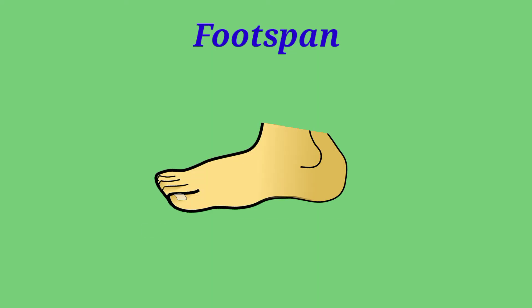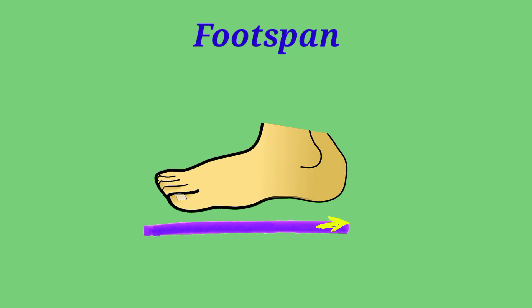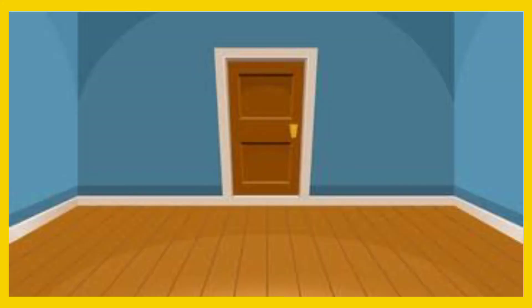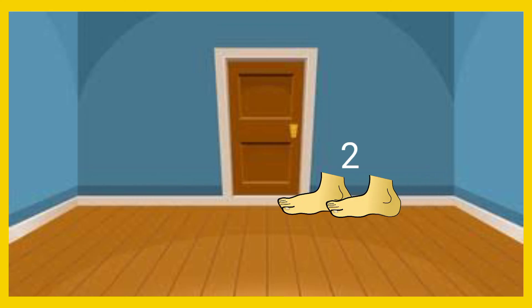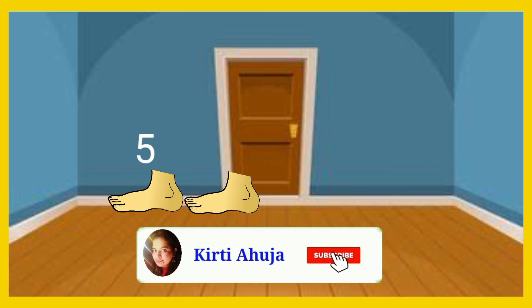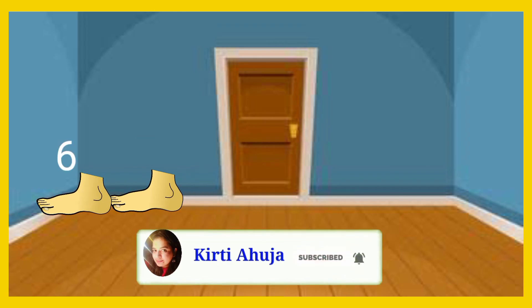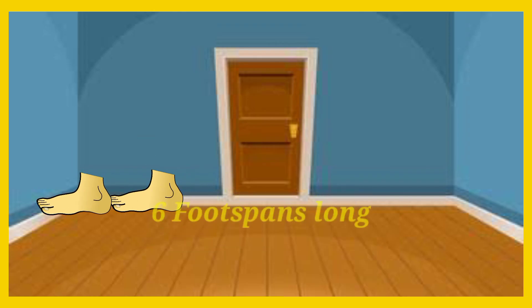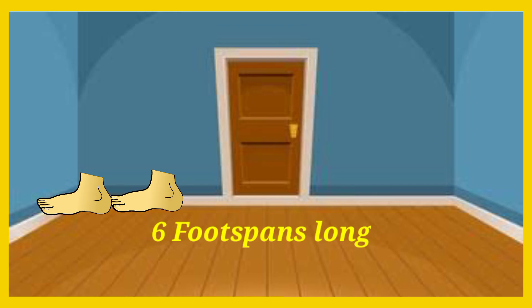Now, what is foot span? Foot span is the distance from the tip of the toe to the ankle. Let's measure the length of this room using foot span: 1, 2, 3, 4, 5, and 6. So we can say the length of this room is 6 foot spans.